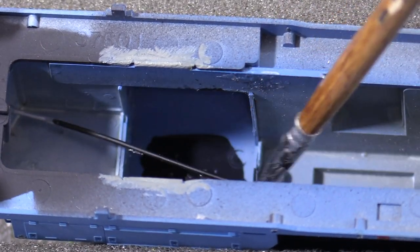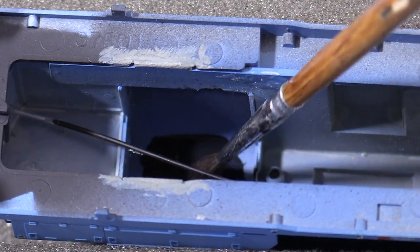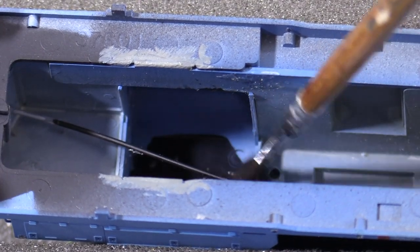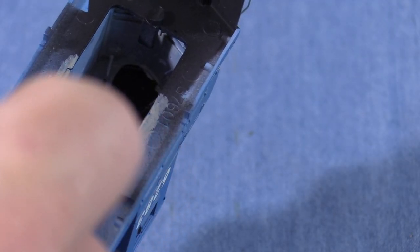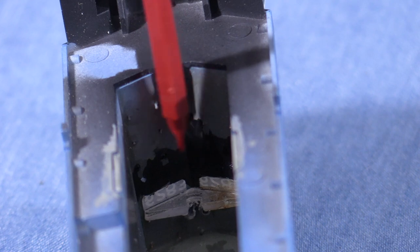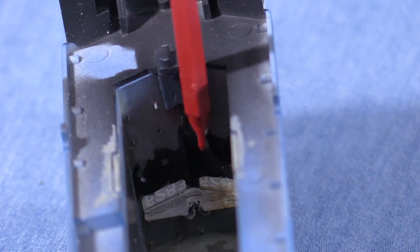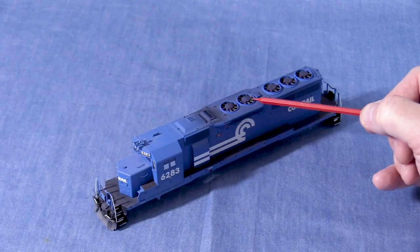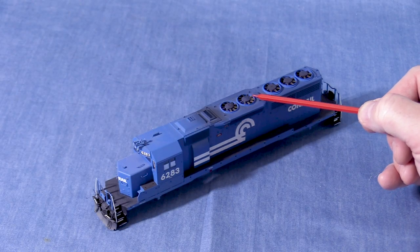While I still have the black paint out, I'll brush some inside the cab roof. This is a precaution to help prevent light leaks. I'll brush some black paint inside the short hood too. I also brushed a little around the rear number boards, being careful not to get paint on the number boards themselves. To prevent light from leaking through the cannon fan openings, I'll need to construct a barrier that will do double duty as part of the speaker enclosure.